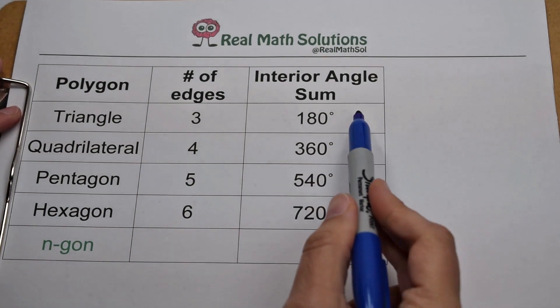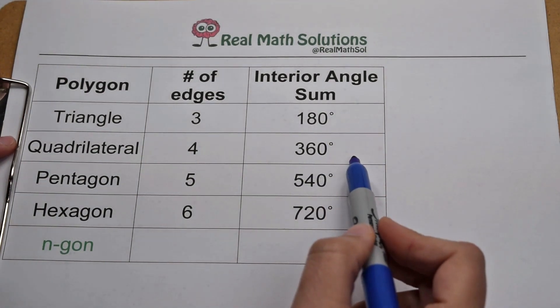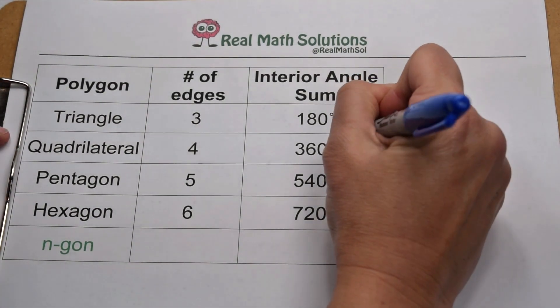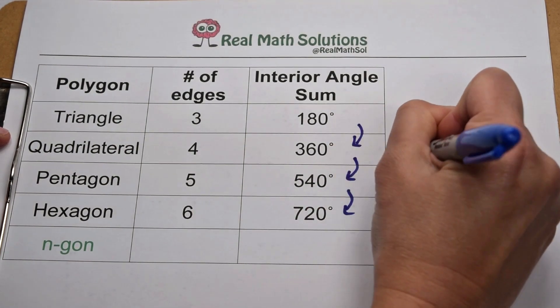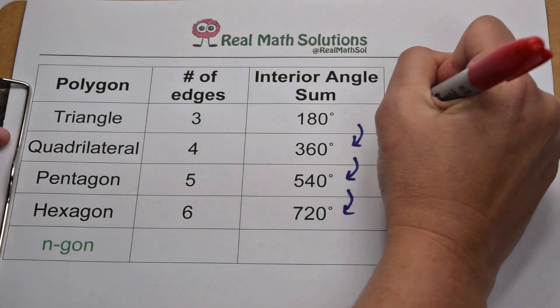Let's take our data, arrange it in the table so we can look for a pattern. Triangles no matter what are 180, quadrilaterals 360, pentagons 540, hexagons 720. Well if we look, we can again see that we are constantly increasing by 180 degrees each time. So that means we're again working with multiples of 180.